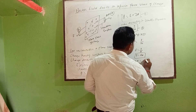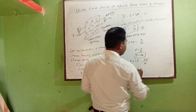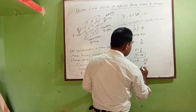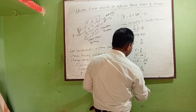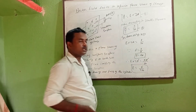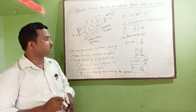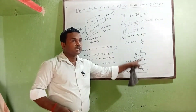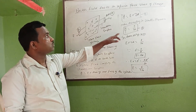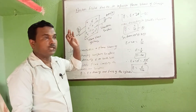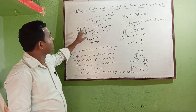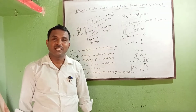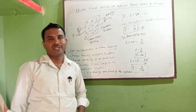Substituting, the area A cancels out, and we get: E equals Sigma by 2 epsilon naught. So the electric field due to an infinite plane sheet of charge is E equals Sigma by 2 epsilon naught. This formula is derived using Gauss's theorem. Write this formula — very good.